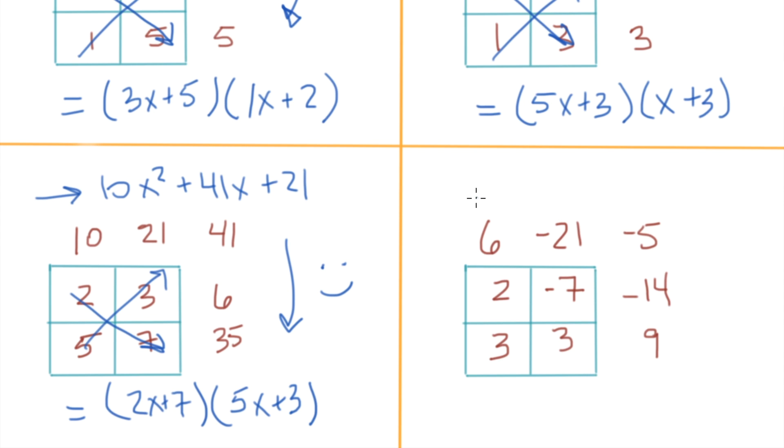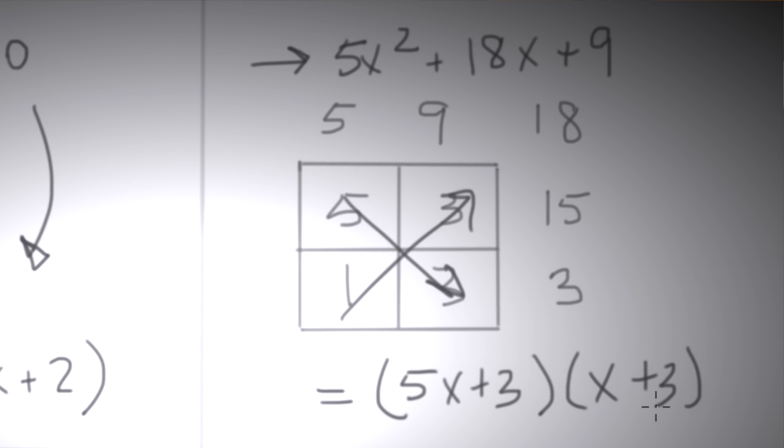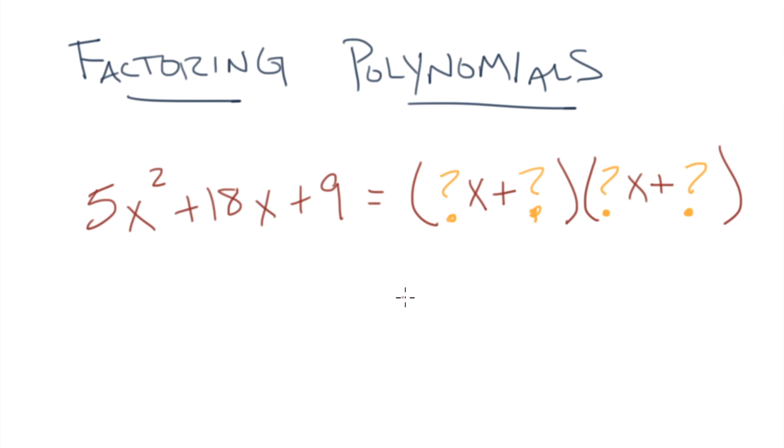Let's do this next one in double speed again. Now let's go back to our first example. We can fill in our question marks now. Do you recognize this problem? 5x squared plus 18x plus 9 factors into 5x plus 3 times x plus 3. But just for good measure, let's do one more problem.